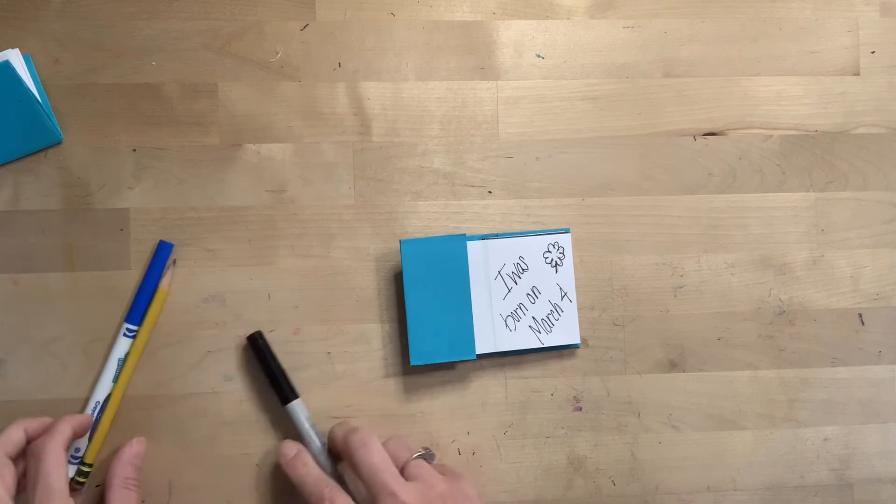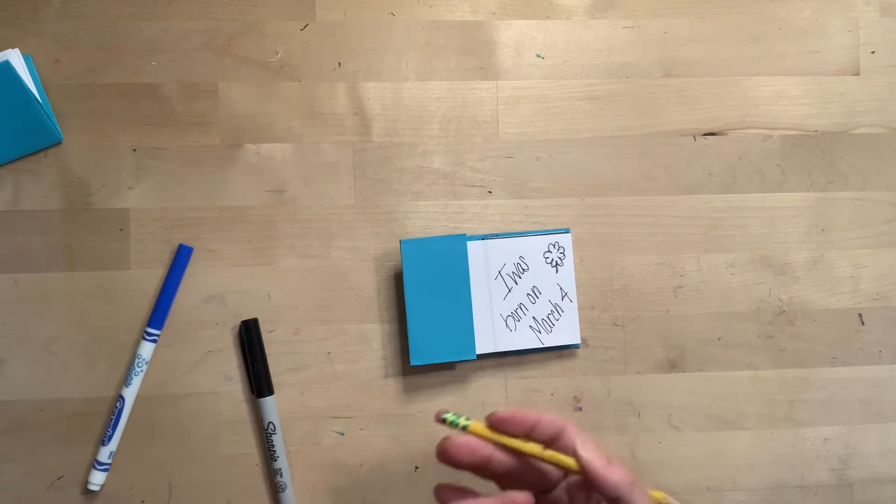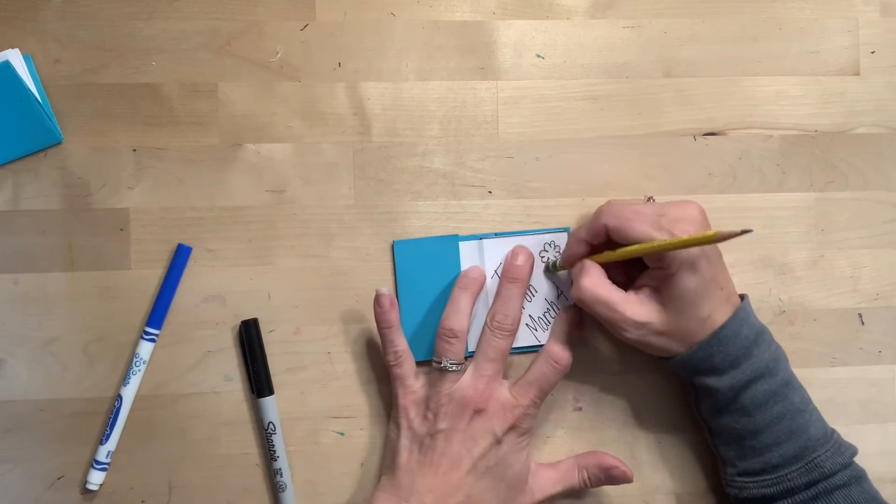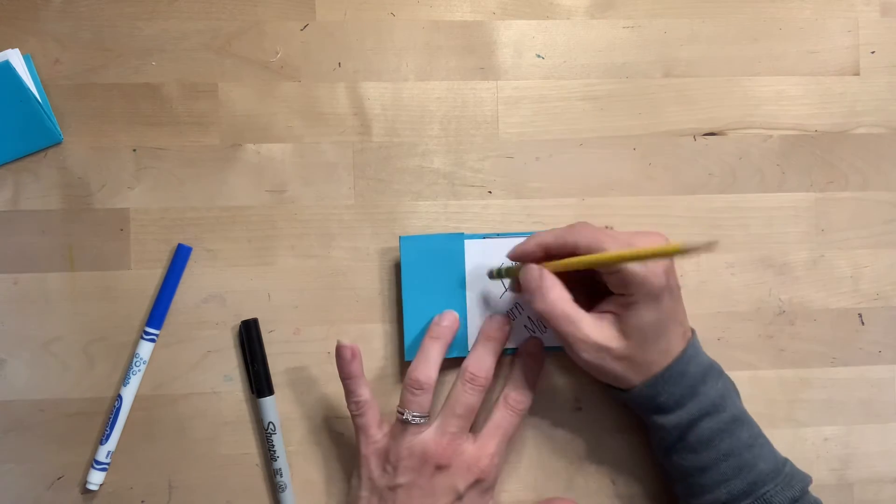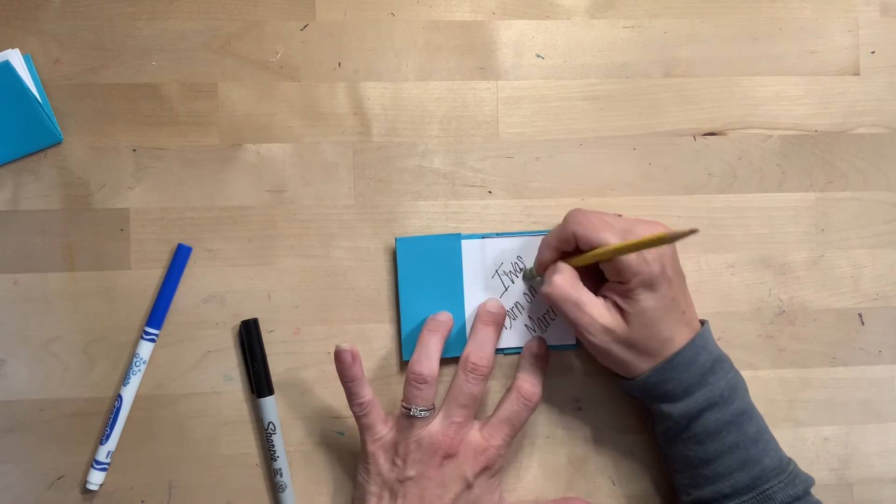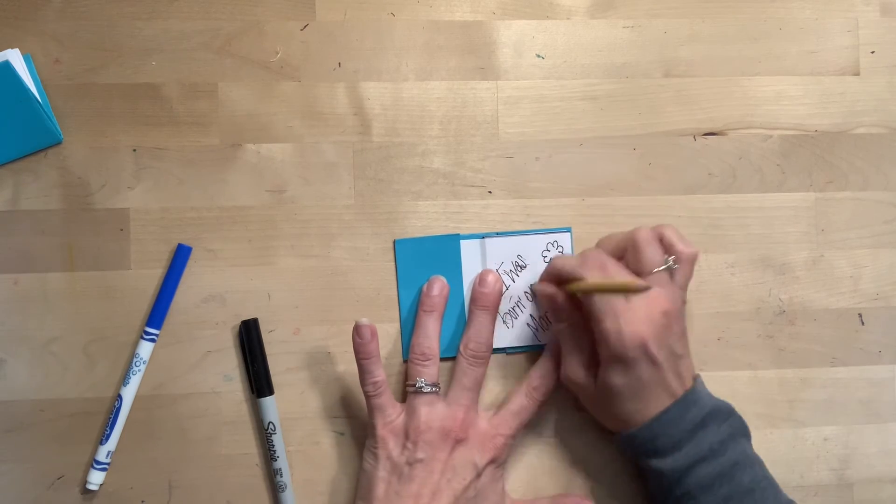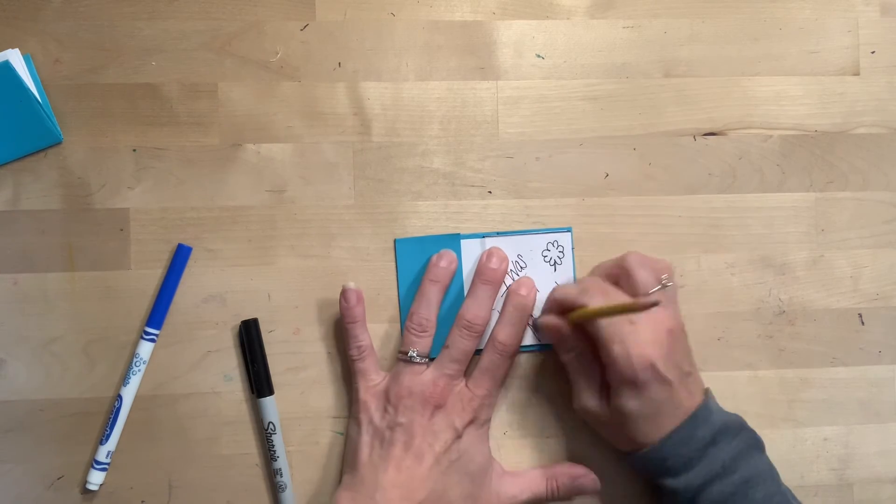And then just like we usually do after you're done tracing with the marker, the pen, whatever it might be, take your eraser and erase those pencil marks because this is a book and we want it to look the best that it possibly can and be nice and clean, not sloppy.